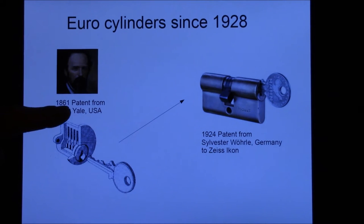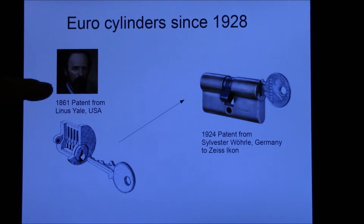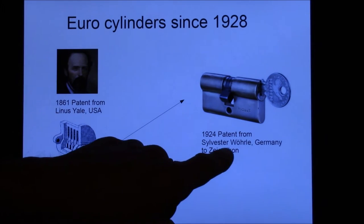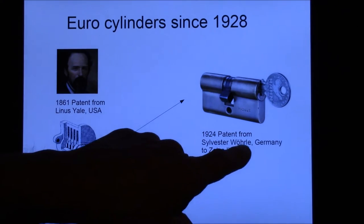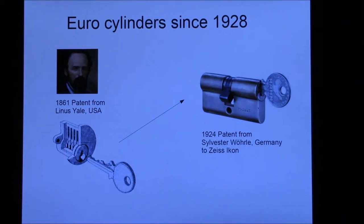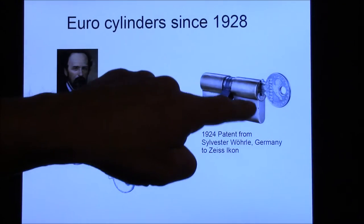This goes back to a patent filed by Linus Yale in the United States. He invented the first pin tumbler and his patent was from 1861. Based on this invention, the German guy Sylvester Wörle filed a patent in 1924 for this type of lock, the Euro cylinder.